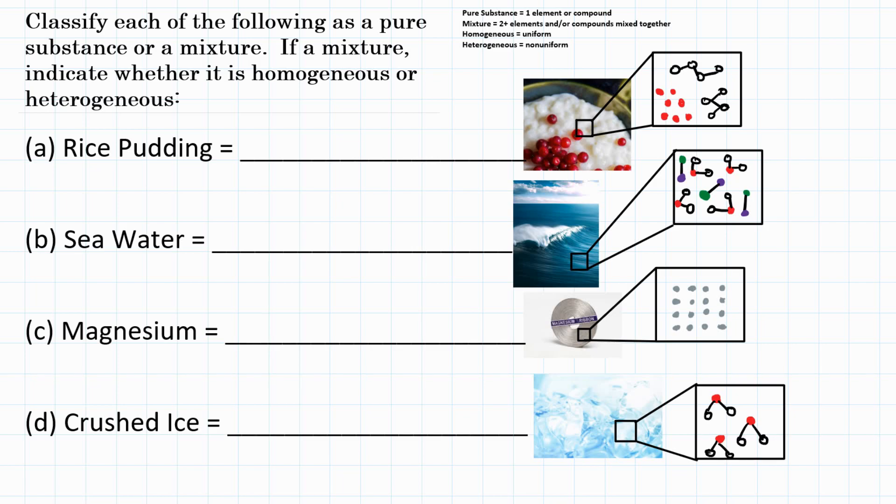Is it homogeneous though or is it heterogeneous? In other words, does it have uniform composition or is it non-uniform? So looking at rice pudding, you can clearly see with just your eye that the berries there are red. You can maybe see the little pieces of rice and then the pudding that kind of goes in between it all.